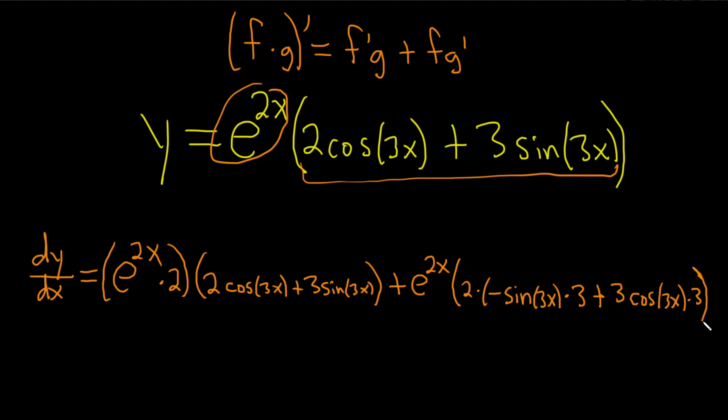Let's just double check that. That was a lot of work. So from the beginning the derivative of e to the 2x is e to the 2x times the derivative of the inside which is 2. So this is the derivative of the first times the second.